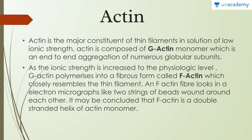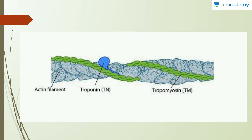Actin is the major constituent of the thin filament. In solutions of low ionic strength, actin is composed of G-actin, which is an end-to-end aggregation of numerous globular subunits — hence the name G-actin. As the ionic strength increases to physiologic levels, G-actin polymerizes into a fibrous form called F-actin. An F-actin fiber looks in an electron micrograph like two strings of beads wound around each other, making F-actin a double-stranded helix of actin monomers.